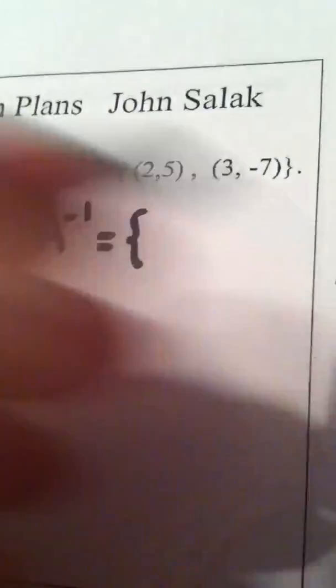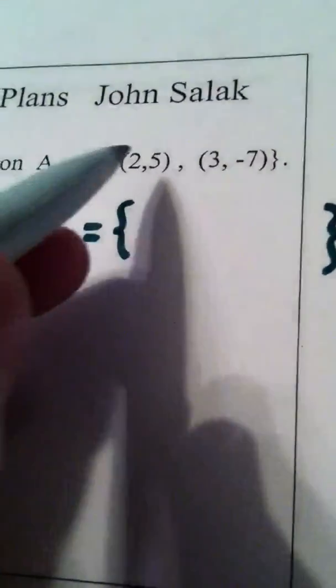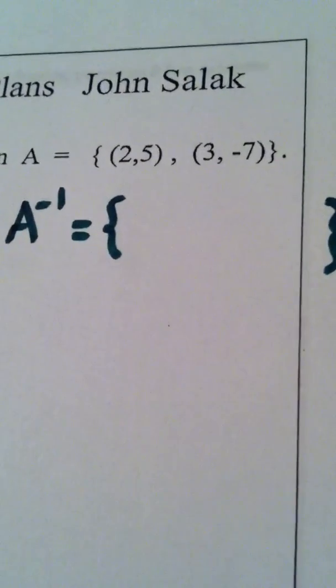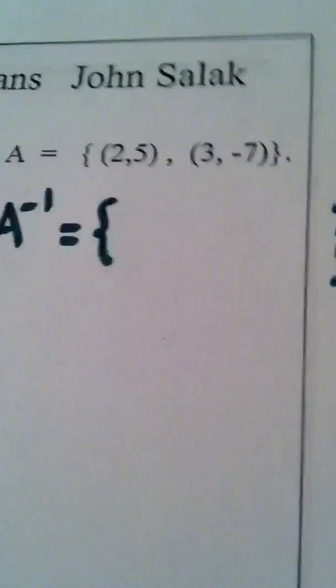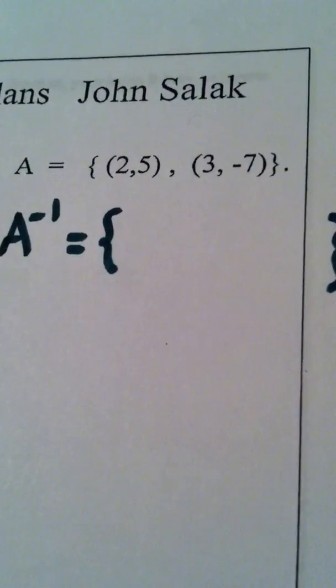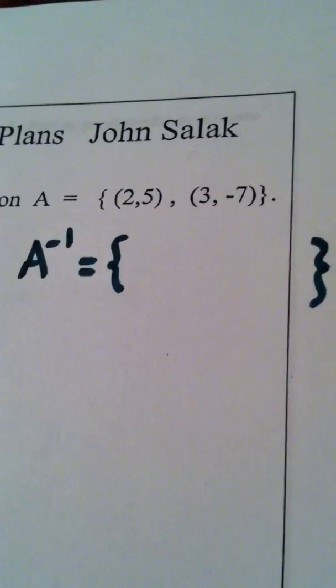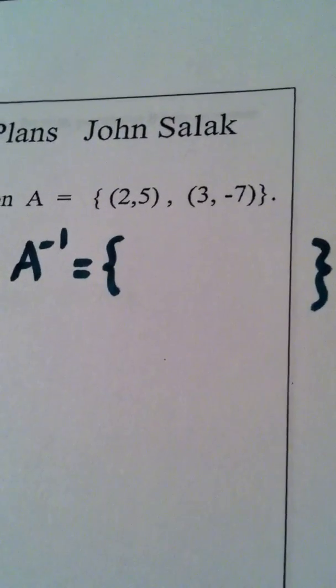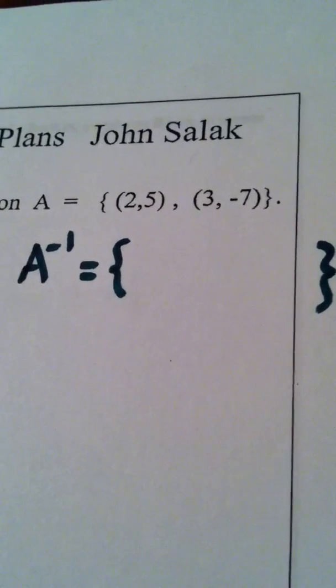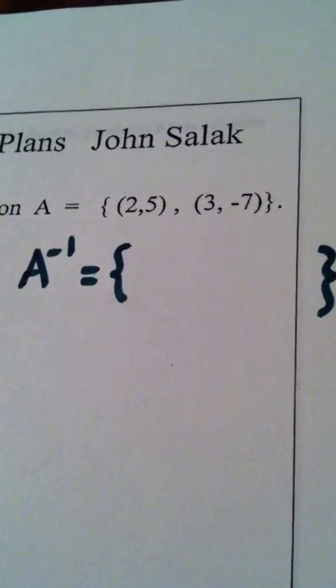And the way you find the inverse of a relation is you take the ordered pairs and you interchange the domain with the range. So another way of saying that is the input becomes the output and the output becomes the input.